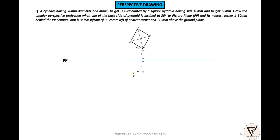Now, ground plane and horizon plane. Distance point here to the left. Horizon plane — station point here. Ground plane to horizon plane distance is 110mm.